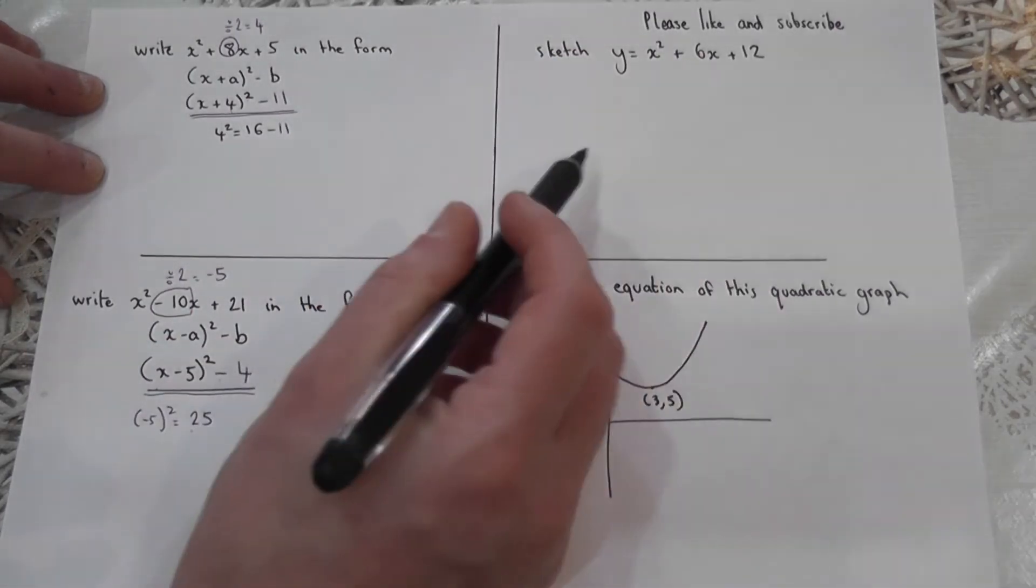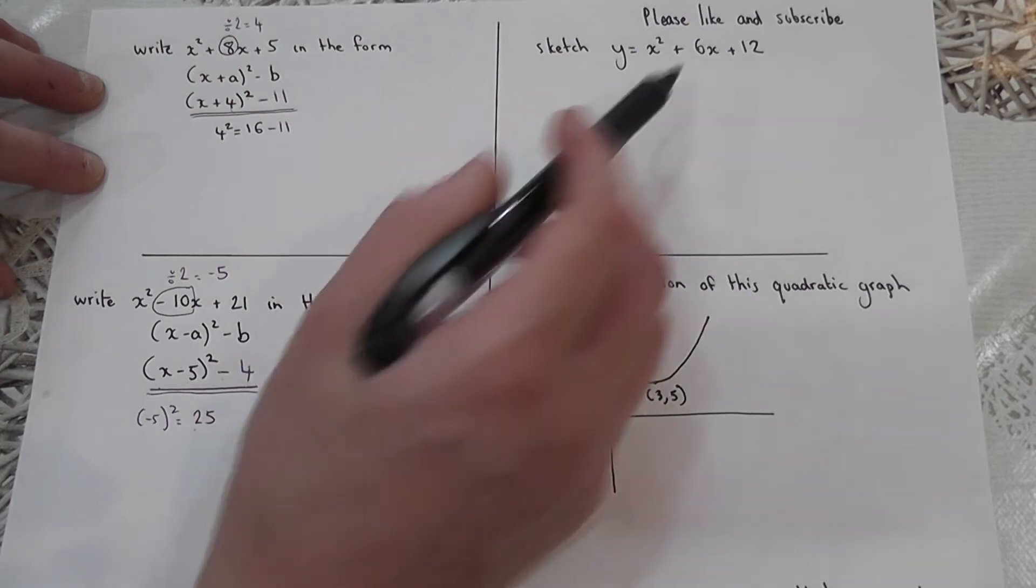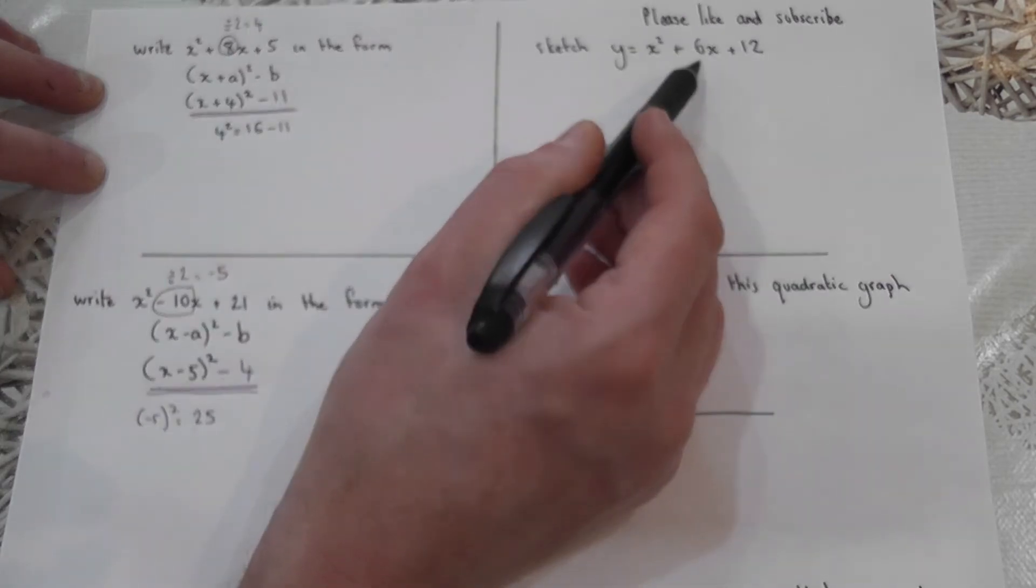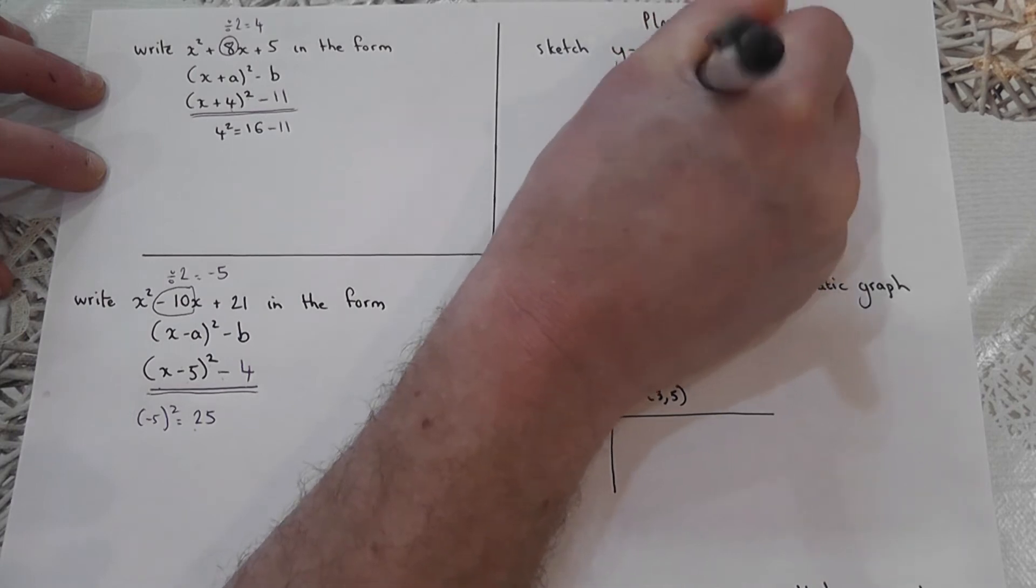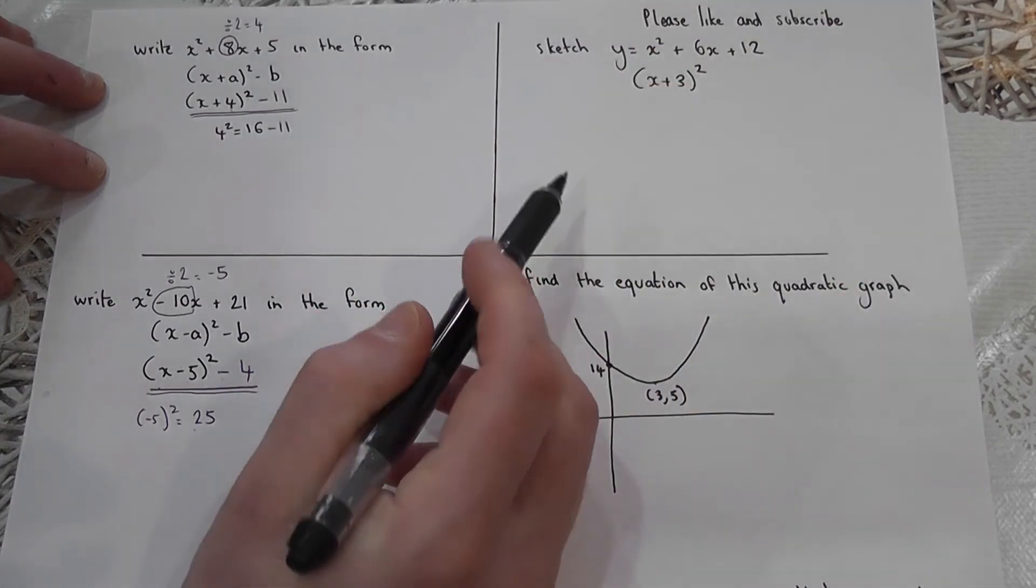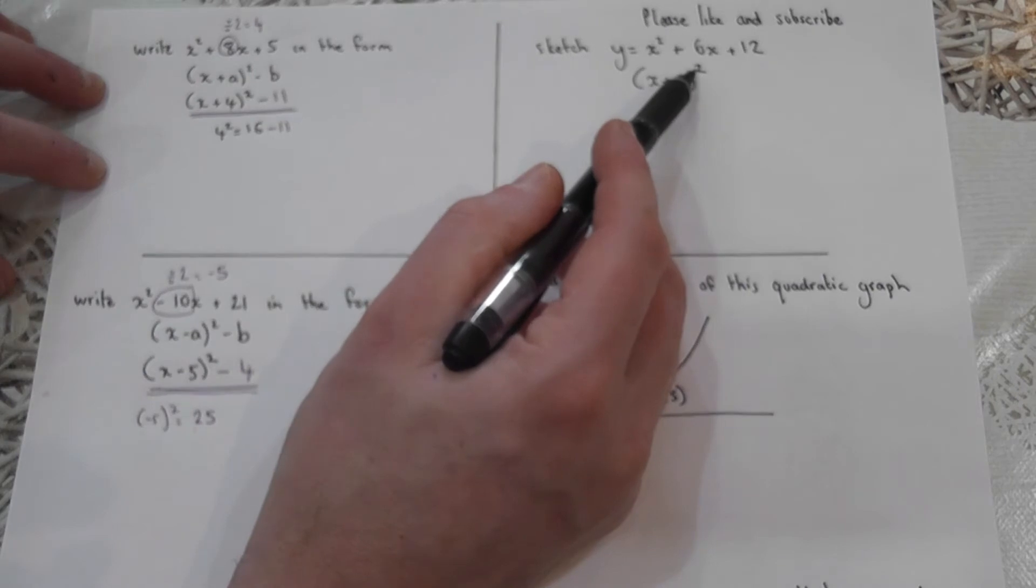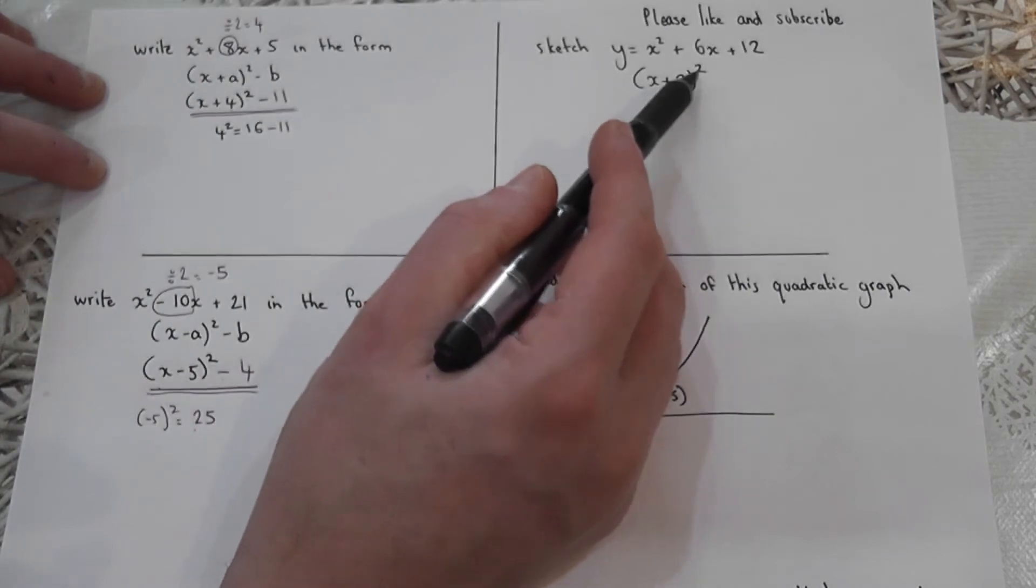Here's an expression. I'm going to complete the square. A half of six is three. So this becomes x plus three squared. However, three squared is nine.